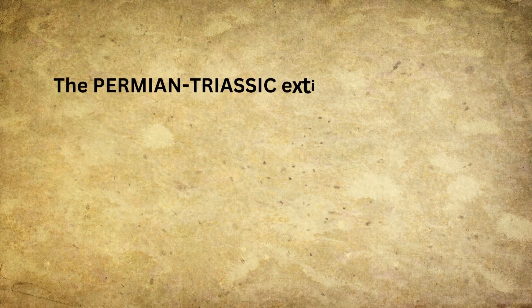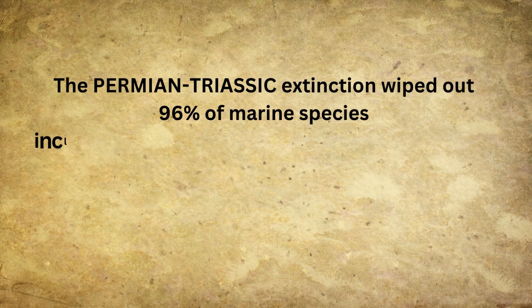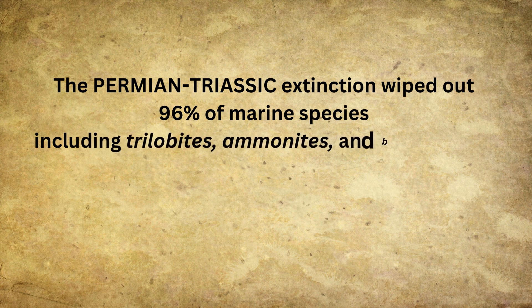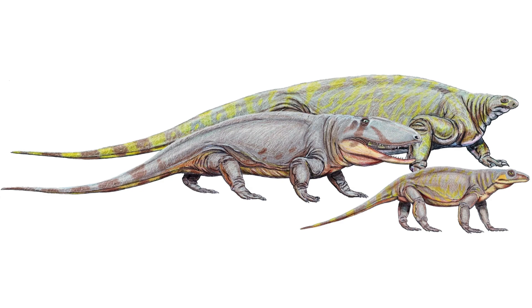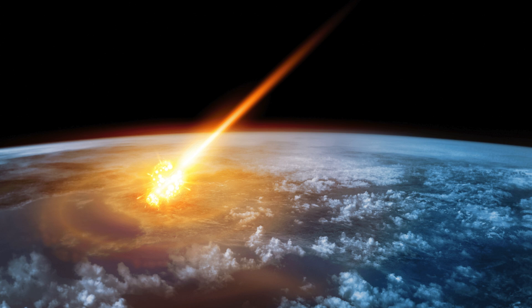The Permian-Triassic extinction was the most severe extinction event in Earth's history, leading to the loss of about 96% of marine species including trilobites, ammonites, and brachiopods, and 70% of terrestrial vertebrate species including dominant groups such as synapsids — large herbivorous and carnivorous mammal-like animals. This extinction event profoundly changed the course of evolution, allowing dinosaurs and mammals to become the dominant land animals in the Mesozoic and Cenozoic eras. The boundary between the Permian and Triassic periods is marked by a distinct sediment layer with elevated levels of iridium, suggesting an asteroid or comet impact may have contributed. The event also caused significant changes in terrestrial environments including deforestation and soil degradation.